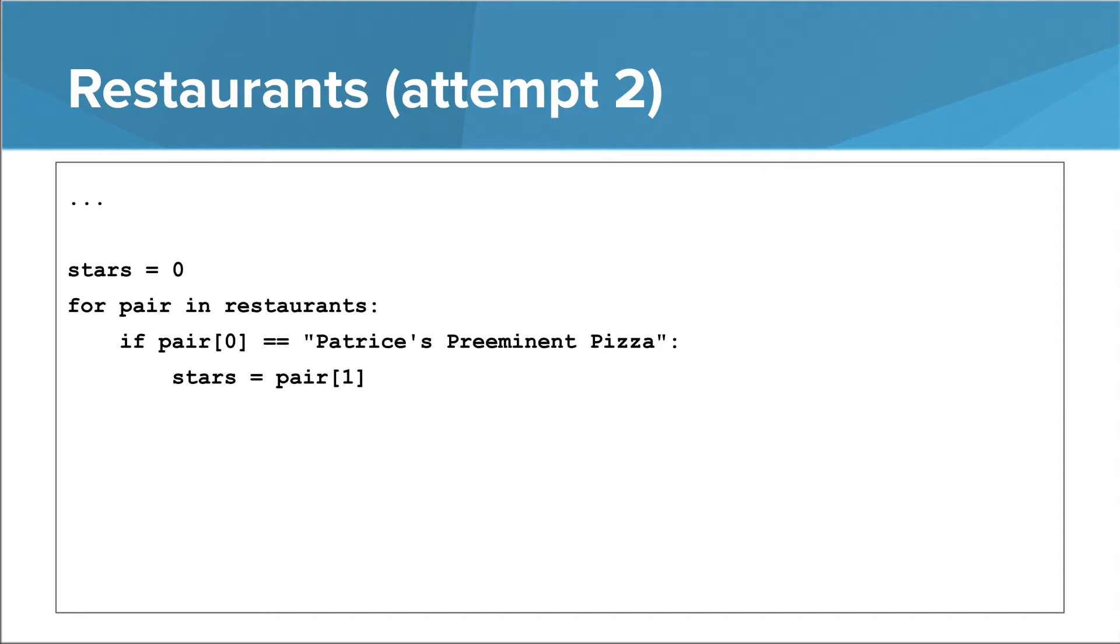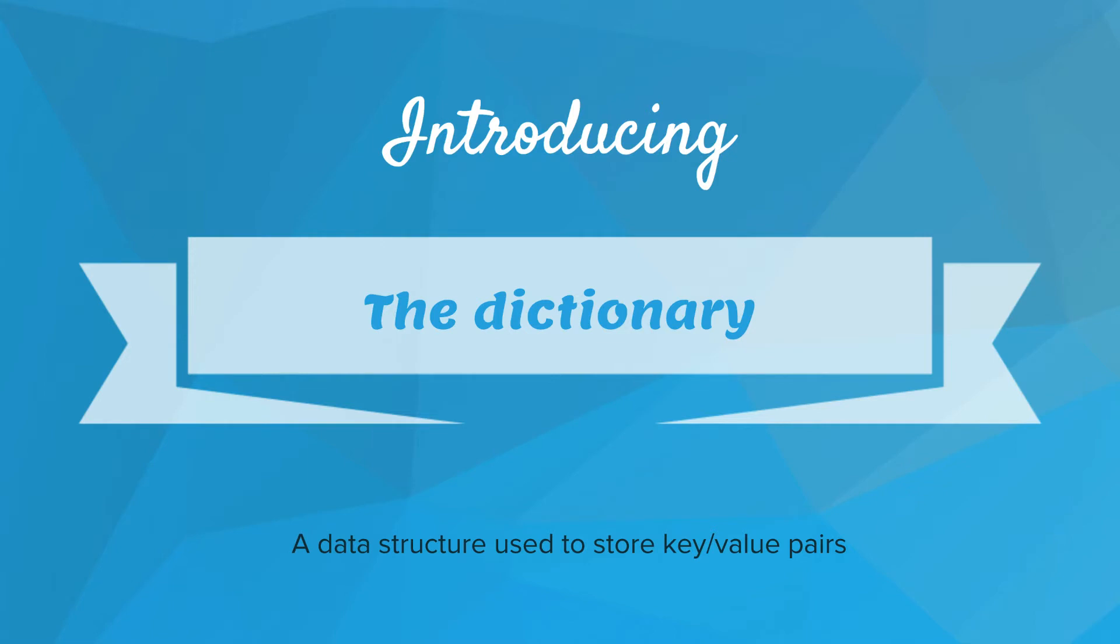What would be great is if we had a data structure where we could look something up by something other than a numerical index. Well, thankfully, Python has exactly that, and it's called a dictionary.